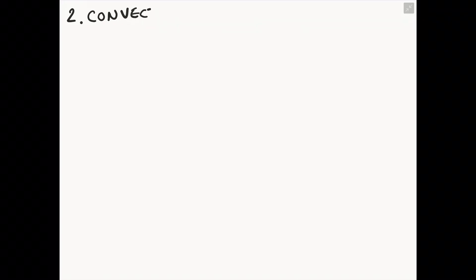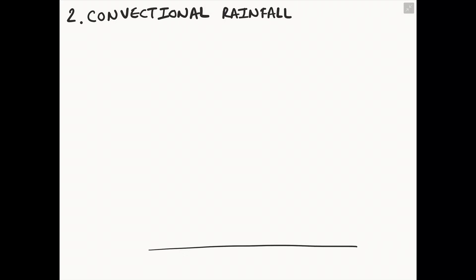Our second type of rainfall is called convectional rainfall. Convectional rainfall occurs mainly along the equator. In this example, we are going to use Kenya, which is a country located in Africa.